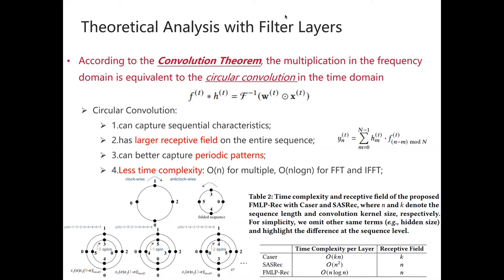According to the convolution theorem, multiplication in the frequency domain is equivalent to circular convolution in the time domain. The circular convolution has the following advantages. First, it can capture sequential characteristics. Second, it has a larger receptive field over the entire sequence. Third, it can better capture periodic patterns, which are essential for recommendations in user behaviors. Finally, it has lower time complexity: O(N) for multiplication and O(N log N) for FFT and inverse FFT. In this way, we achieve both lower time complexity and a larger receptive field.